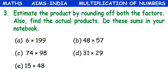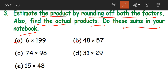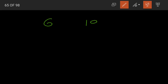Another use of estimation. Now estimate the product by rounding off both the numbers. Find the actual products — do these sums in your notebook, that means this is for your homework. But let us solve two problems out of this — A and B. What are they saying? Estimate the product by rounding off both the factors. First: 6 and 199.